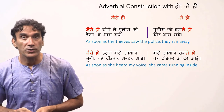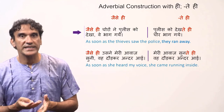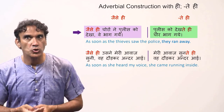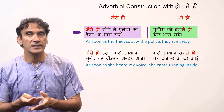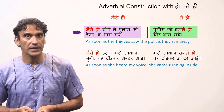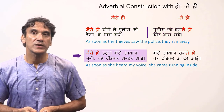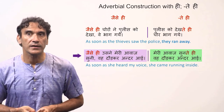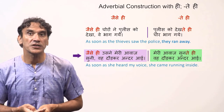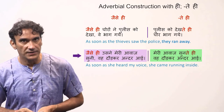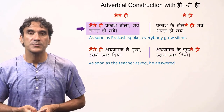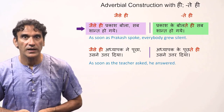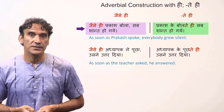Let's now take both types of construction side by side. 'Jaise hi choro ne police ko dekha, ve bhaag gaye' — 'Police ko dektehi, choro bhaag gaye' — as soon as the thieves saw the police, they ran away. 'Jaise hi usne meri awaaz suni, wo dhaur kar andar aai' — 'Meri awaaz sunthehi wo dhaur kar andar aai' — as soon as she heard my voice, she came running inside. 'Jaise hi Prakash bola, sab shant ho gaye' — 'Prakash ke boltehi, sab shant ho gaye' — as soon as Prakash spoke, everybody grew silent.